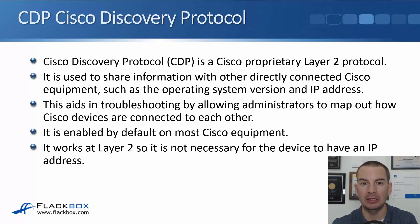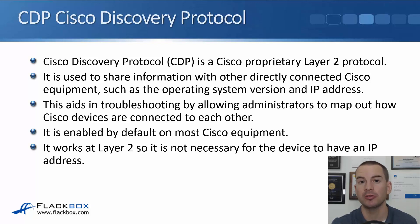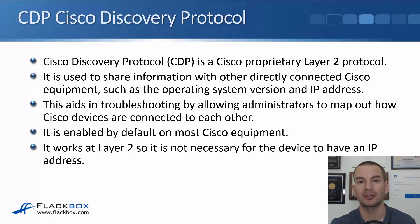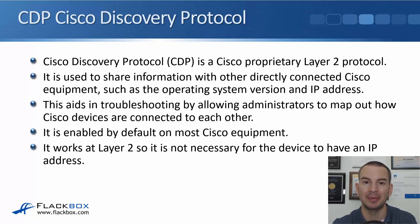CDP is enabled by default on most Cisco equipment — not just on routers and switches, but also on firewalls and even software like Cisco Unified Communications Manager, which controls IP phones, and even the IP phones themselves will run CDP. So if you go onto a switch with the Cisco Unified Communications Manager server and IP phones plugged in, you'll be able to get information about those devices. CDP works at Layer 2, so it's not necessary for the device to have an IP address to be detected by its neighbors.